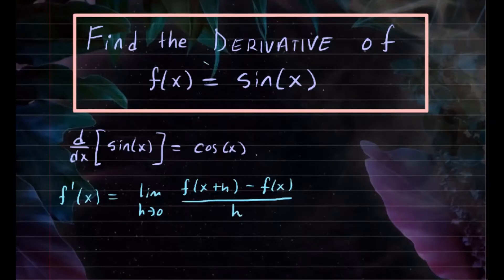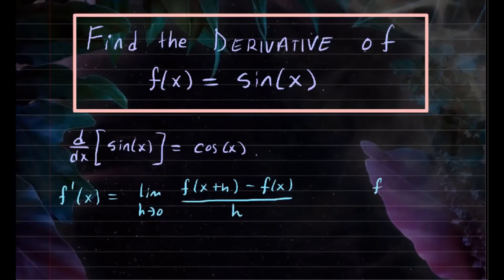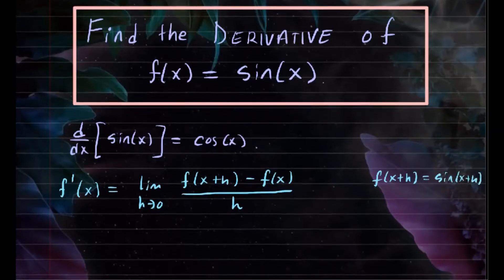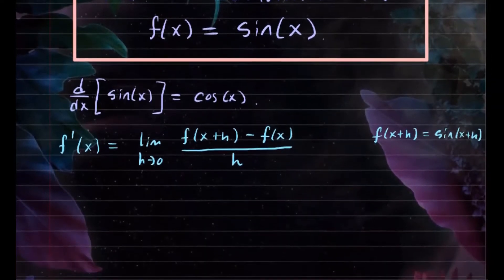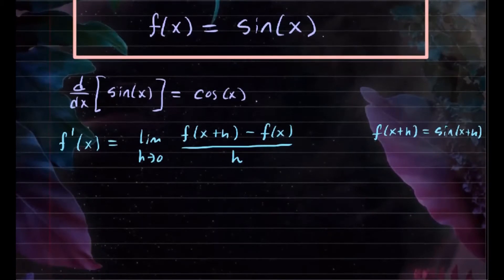So since f of x is sine of x, we're going to replace that into this definition. We need to find what f of x plus h is, so we input x plus h into the function. That gives us sine of x plus h, and that's what we're going to replace in our limit definition.